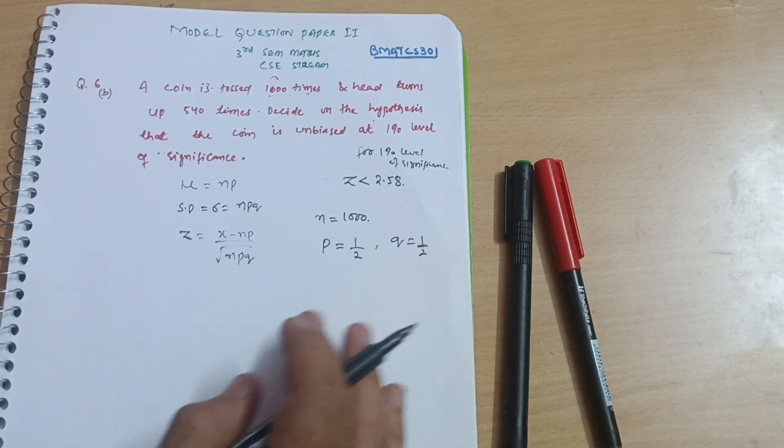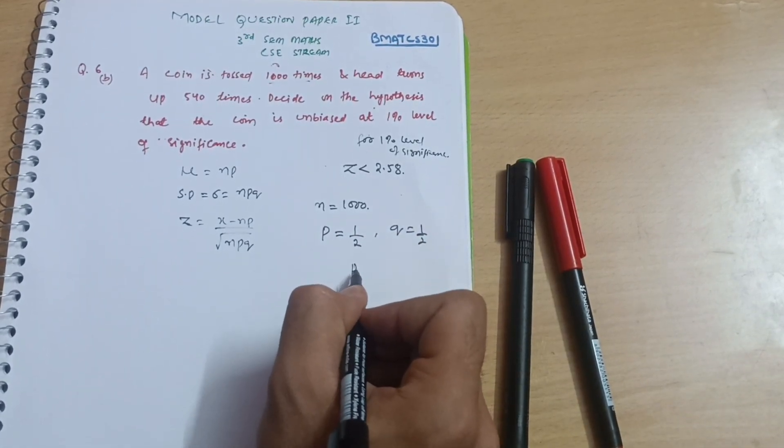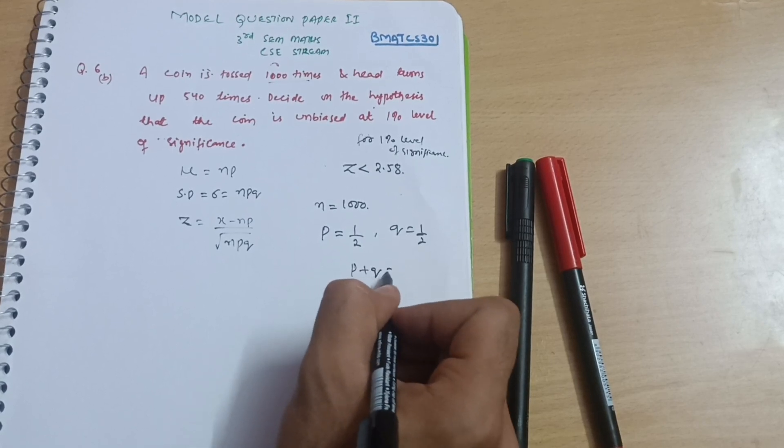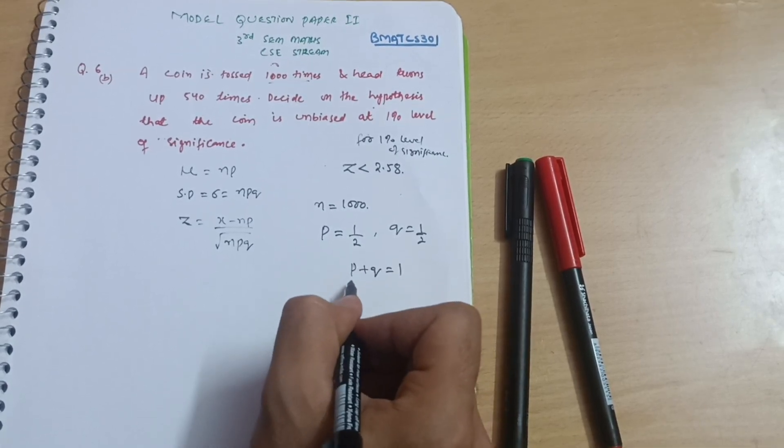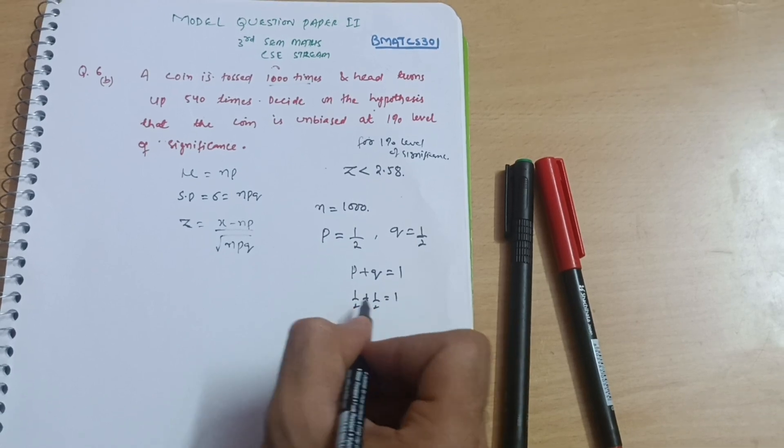So p equals 1 by 2, q equals 1 by 2. You already know from p itself that the sum of probabilities of all events should equal 1. So p plus q equals 1, which is 1 by 2 plus 1 by 2, obviously equal to 1. This is the correct equation.